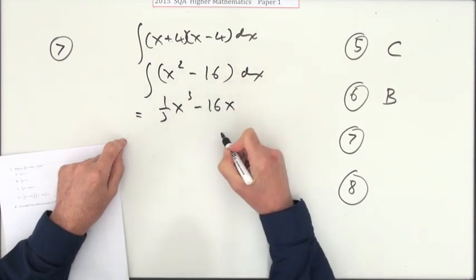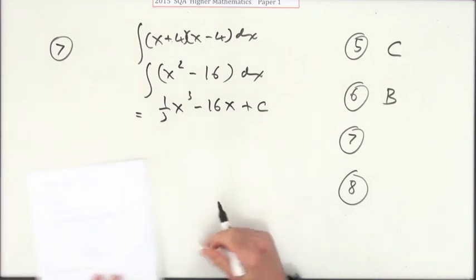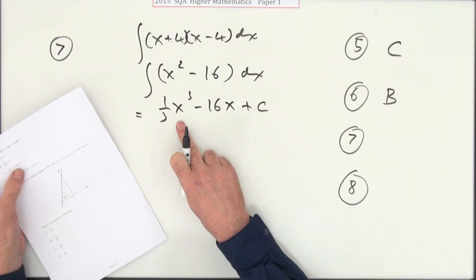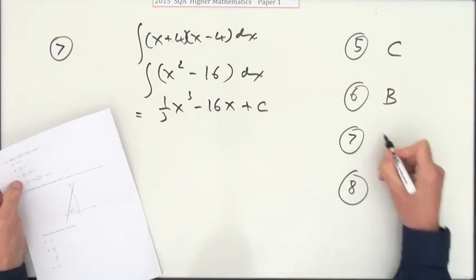That comes to, so integrate, add 1 to the power, divide by that power. That goes back up to the linear term and there might have been an unknown constant. So there's this one here. I'm looking for a third of x cubed minus 16x plus c. That is C.